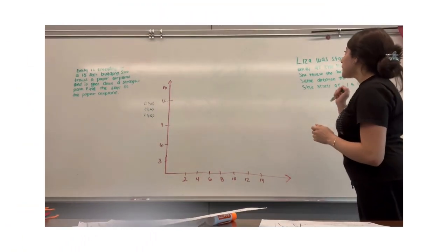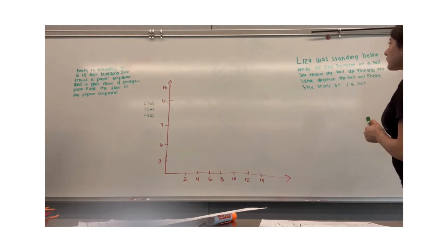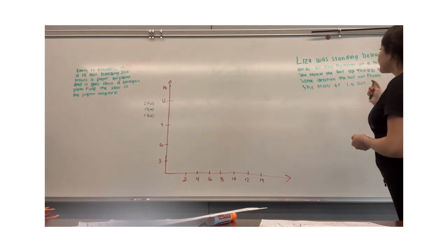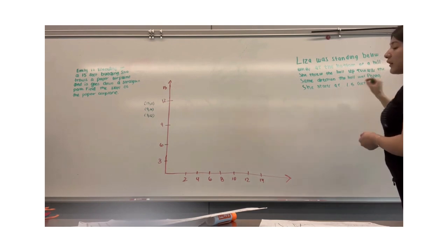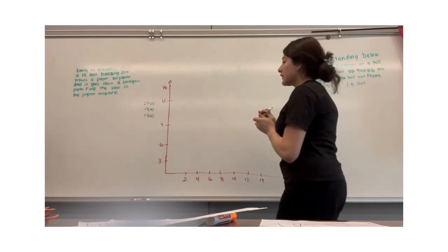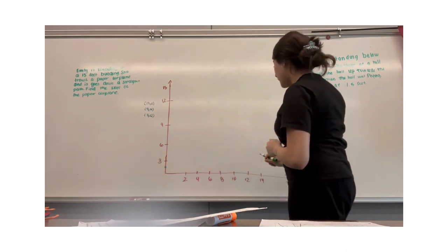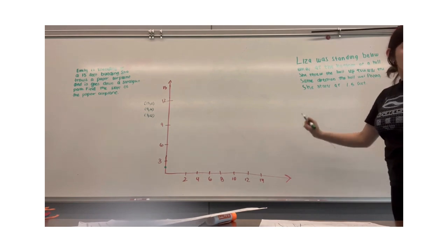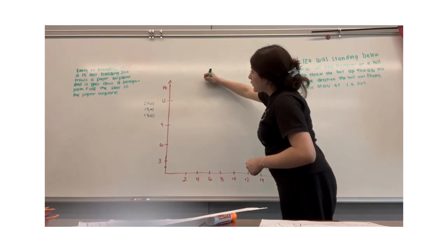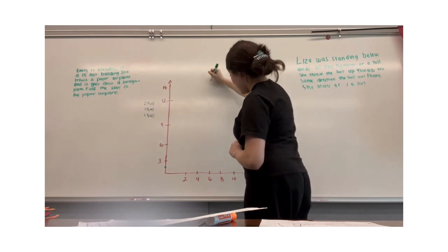Now we're going to talk about the quadratic formula and quadratic equation. So Liza was standing below Emily at the bottom of a hill. She threw the ball up towards the same direction the paper plane was flying, and she starts at 1.5 feet — she throws the ball up at 1.5 feet. If I were to graph this, it would start at 1.5, and then it ends at 10. The maximum point is at 14 feet at x equals 6.